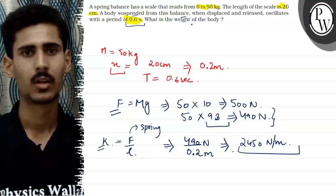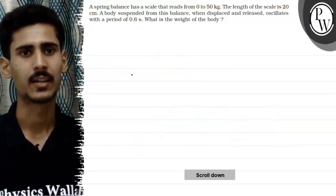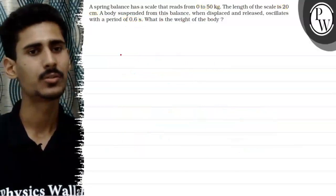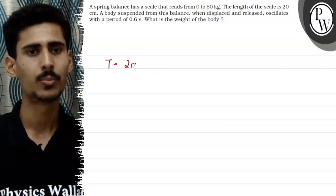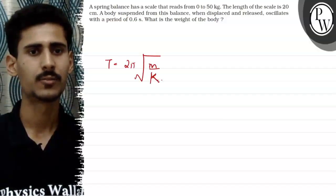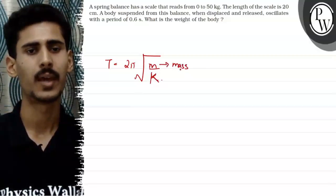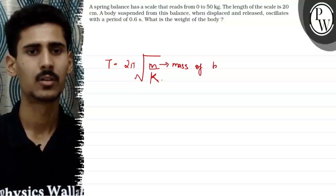So we have to find the mass of the body. So the key concept to be used here is time period equals to 2 pi under root. We have to use this formula to find the mass of the, this small m is the mass of body.